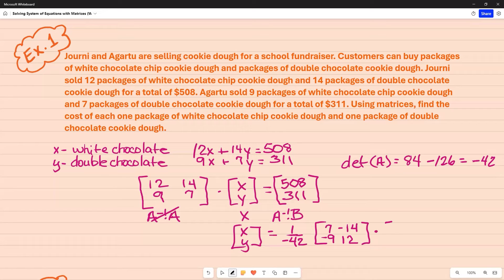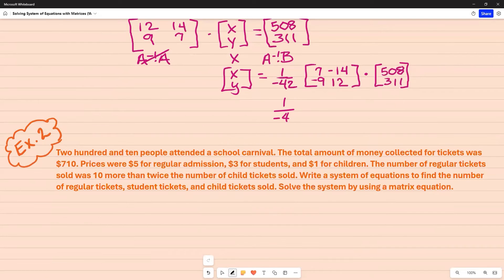Now I'm going to multiply that times B. Well, B is the constant matrix, so that's 508 and 311. I'm going to bring this down, and then I'm going to multiply the first row times this matrix column. So that's going to end up being 3,556 when I multiply 7 times 508, and now I have to take the negative 14 and multiply it times 311 to get negative 4,354.